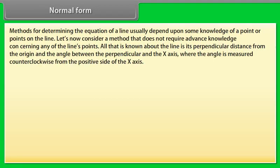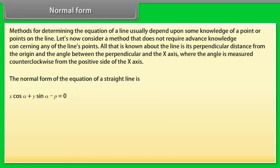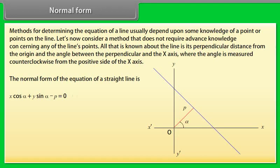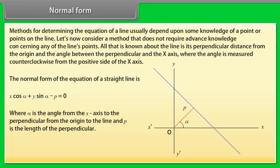Normal form: Methods for determining the equation of a line usually depend on some knowledge of a point or points on the line. Normal form is a method that does not require advanced knowledge of any of the line's points. All that is known is the perpendicular distance from the origin and the angle between the perpendicular and the x-axis, measured counterclockwise from the positive x-axis. The normal form is: x cos α + y sin α − p = 0, where α is the angle from the x-axis to the perpendicular, and p is the length of the perpendicular.